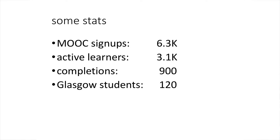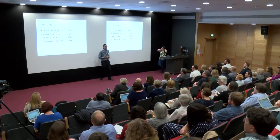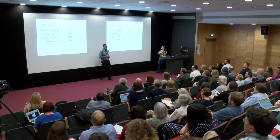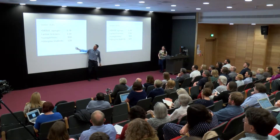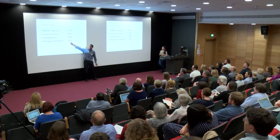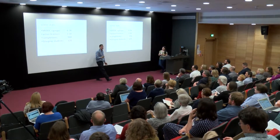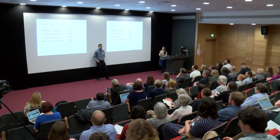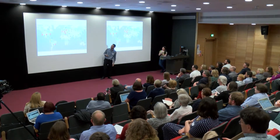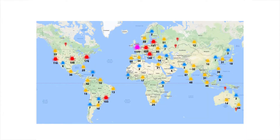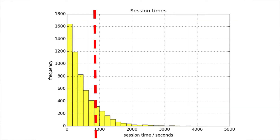Some stats: we had about 6,000 people sign up for the MOOC. Of those, 3,000 actually did something, and 900 people completed the course — meaning they were eligible to pay £50 for a certificate from FutureLearn. 120 of these students were our Glasgow students. People came from all over the world to do our MOOC — didn't get any from Antarctica, but apart from that we did pretty well.